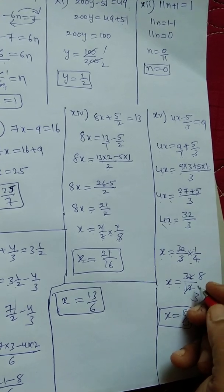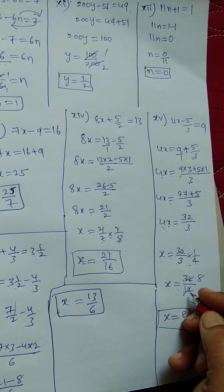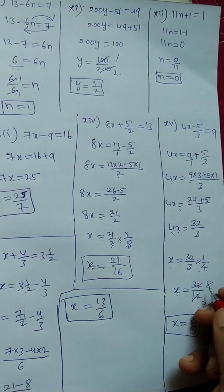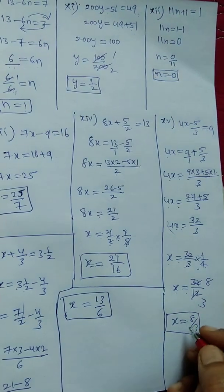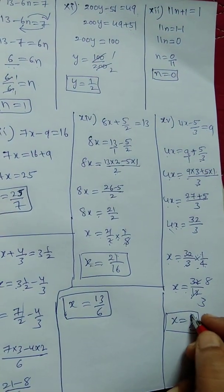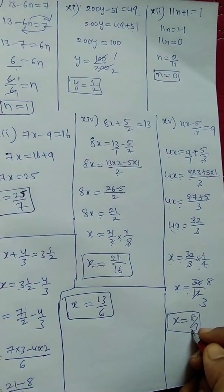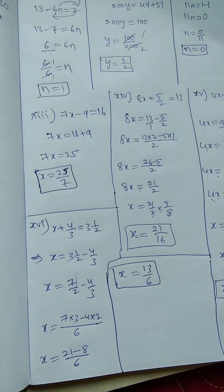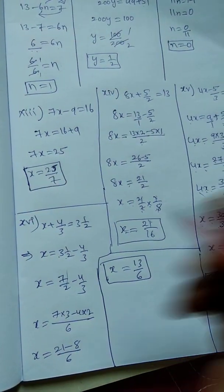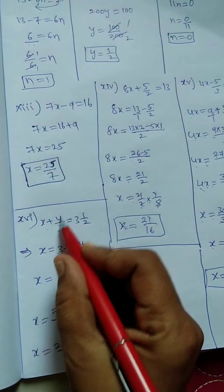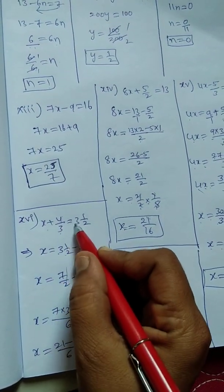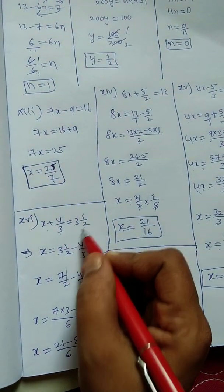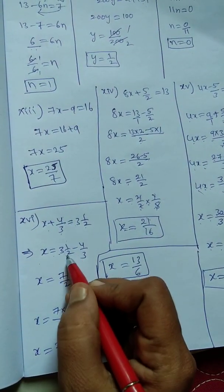After cancellation with the 4 table, x equals 8 by 3.